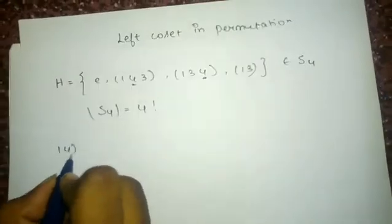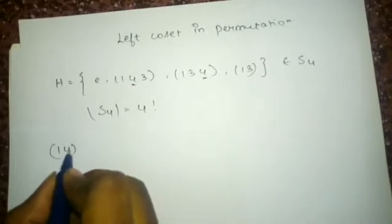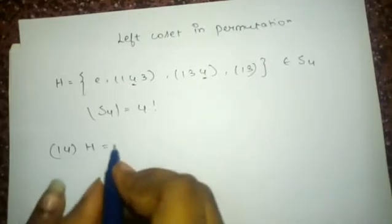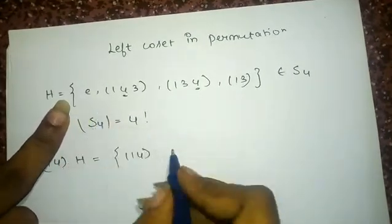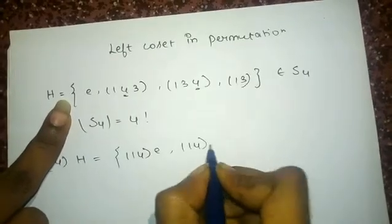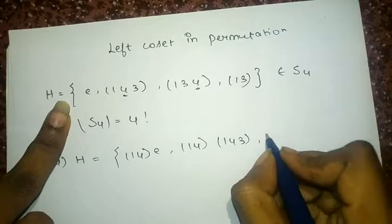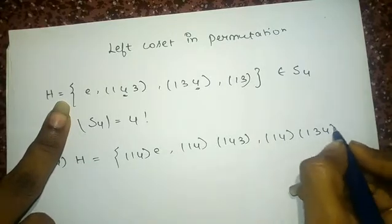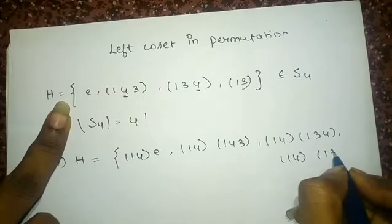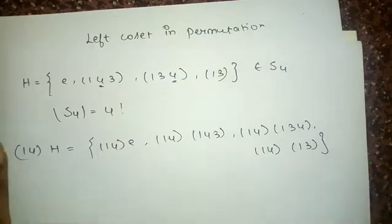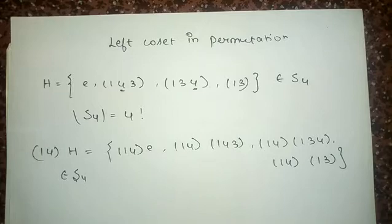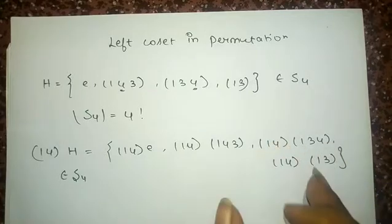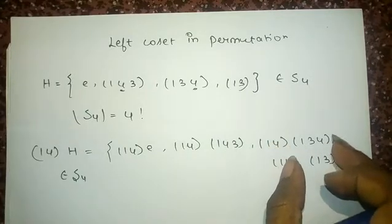I will take a permutation (14) and I am going to find the composition of this permutation with H, which is the left coset. I am going to write (14) first, then (14) followed by (143), (14) followed by (134), and (14) followed by (13). This left coset is also in S4 because the composition of all these permutations will give the highest number as 4.